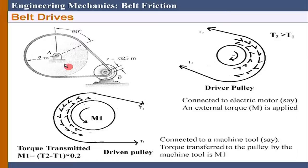I am saying the velocity is constant, so it is a constant speed problem. That means the belt and the pulley both are rotating at the same speed, but there is no actual slippage between the belt and the pulley. They have the same angular velocities. Now if you really try to draw the free body diagram very carefully, this is the free body diagram of the driver pulley.